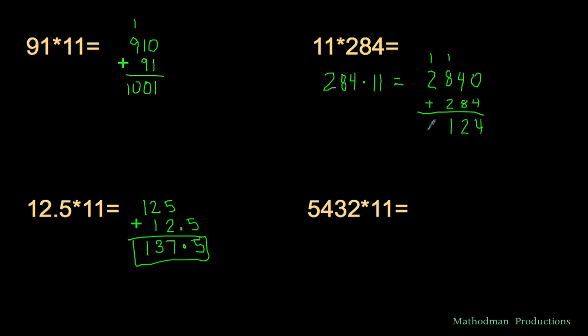And last but not least, the really big numbers. You get intimidated by this, but it's just as easy. 5432, add the 0 at the end, and then add your original number, 5432. Add this up. 0 plus 2 is 2, you get 5 right there, 7, 9. 59,752.